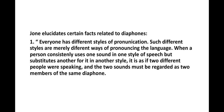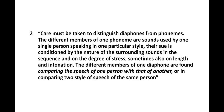John Ellenette states that everyone has different styles of pronunciation. When a person consistently uses one sound in one style of speech but substitutes another in a different style, it is as if two different people were speaking, and the two sounds must be regarded as two members of the same diaphone. We must distinguish diaphone from phoneme: the different members of one phoneme are sounds used by one single person speaking in one particular style, conditioned by surrounding sounds, stress, length, and intonation. The different members of one diaphone are found by comparing the speech of one person with that of another, or comparing two styles of speech of the same person.